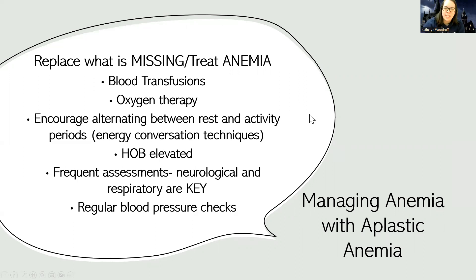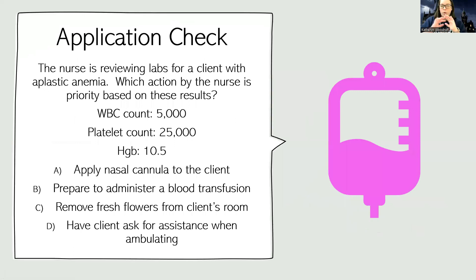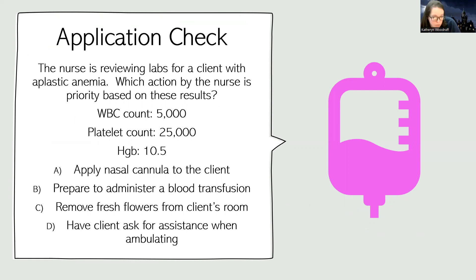Now let's bring it together with an application check. The nurse is reviewing labs for a client with aplastic anemia — which action is priority? Labs: WBC 5,000 (low end of normal), platelet count 25,000 (very low), hemoglobin 10.5 (mild anemia but not critically low). The question asks which action is the priority — all answers may be things to do, but which comes first?